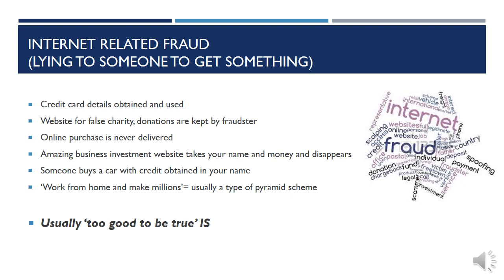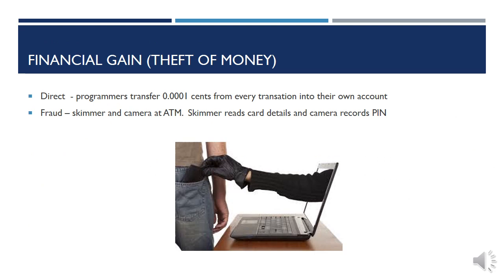Work-from-home and make-millions promises are usually some type of pyramid scheme. Usually when something is too good to be true on the internet, it usually is — so don't trust it. The theft of money can also be direct. There have been stories of programmers working for a bank who transferred 0.0001 of every transaction into their own account. Nobody noticed because that tiny amount is unnoticeable per transaction, but in the end that person accumulated a lot of money.